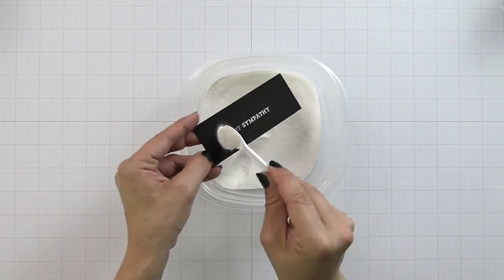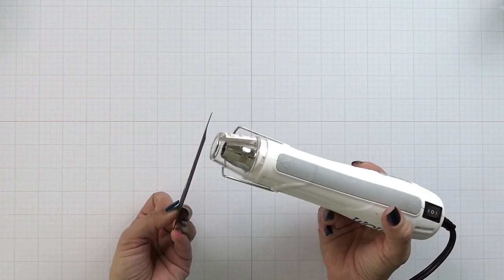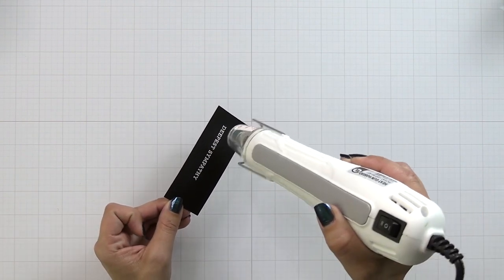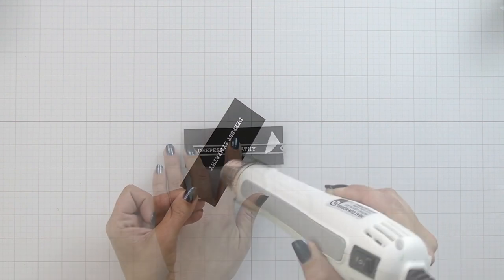Then I can sprinkle on the white embossing powder, tap off any excess, and bring in my heat tool and melt that embossing powder so I have this perfectly crisp and clear white embossing on that black cardstock.